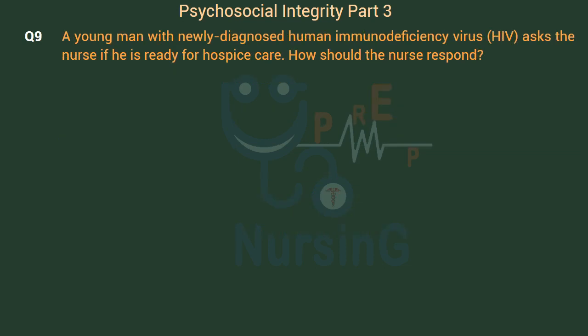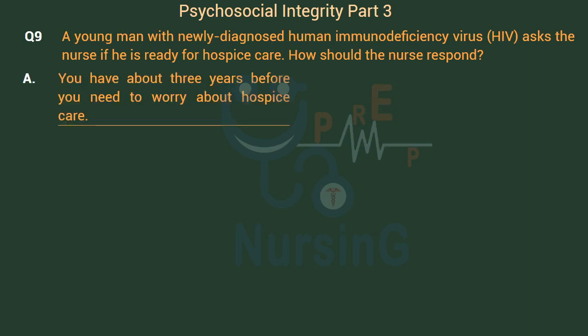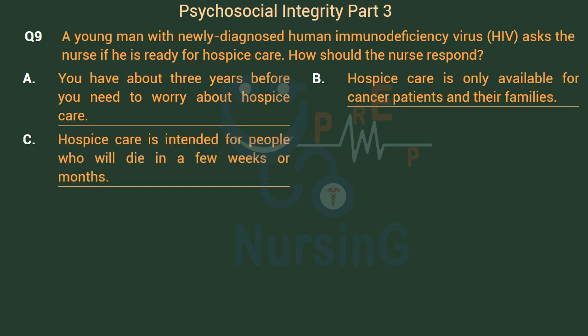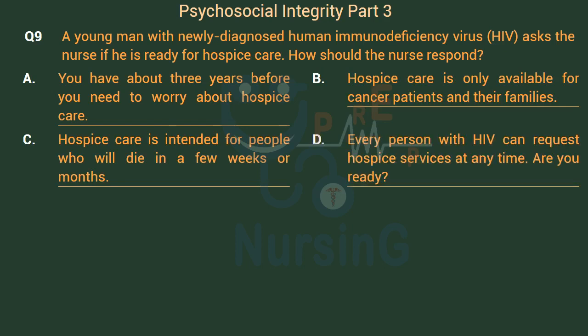A young man with newly diagnosed human immunodeficiency virus (HIV) asks the nurse if he's ready for hospice care. How should the nurse respond? Option A: 'You have about 3 years before you need to worry about hospice care.' Option B: 'Hospice care is only available for cancer patients and their families.' Option C: 'Hospice care is intended for people who will die in a few weeks or months.' Option D: 'Every person with HIV can request hospice services at any time. Are you ready?'